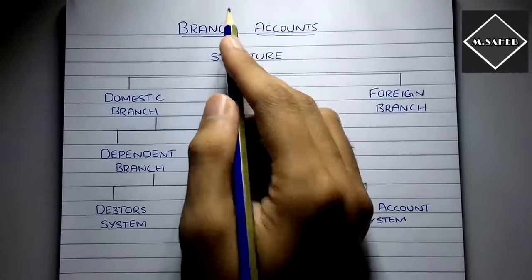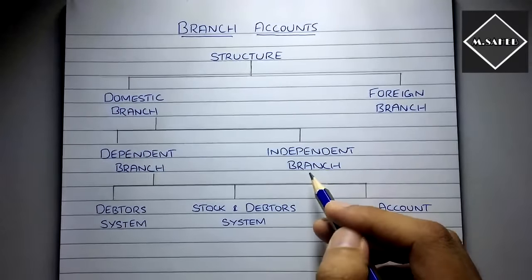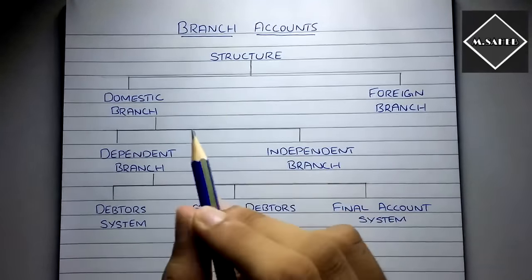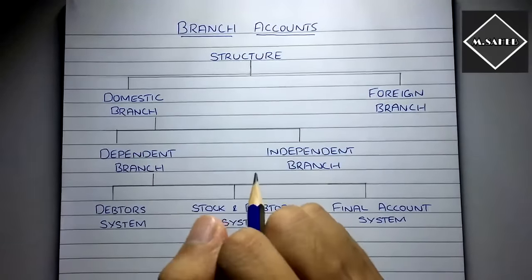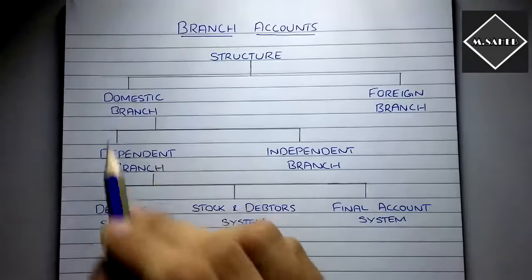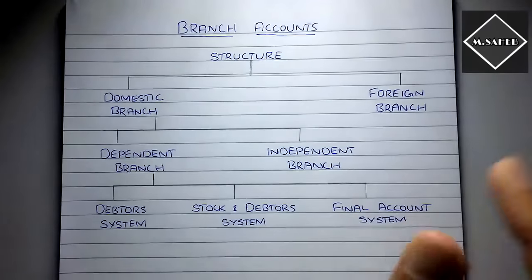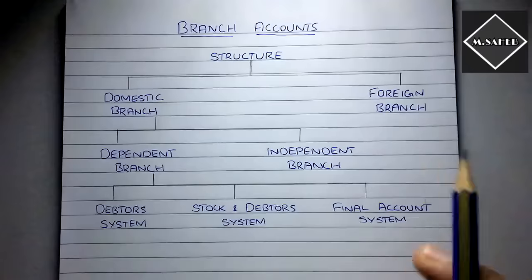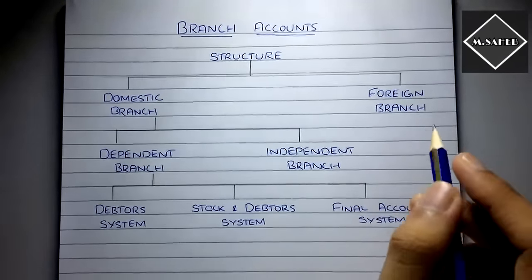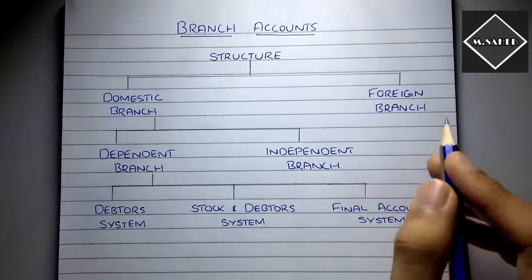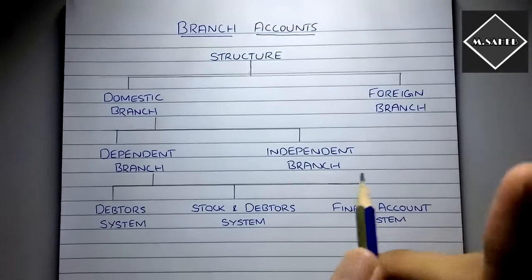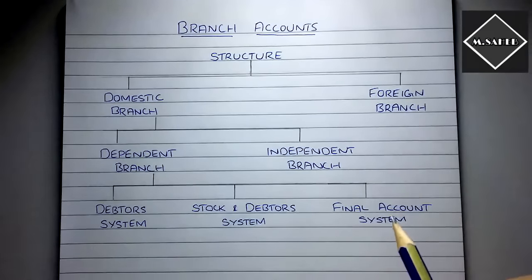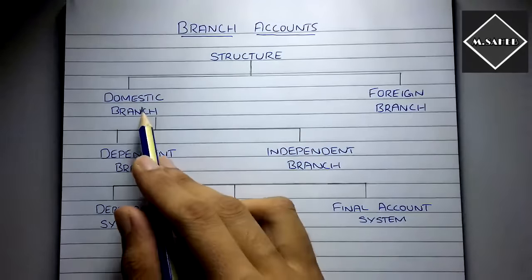Branches are broadly classified into two types: domestic branches and foreign branches. Domestic branches are those located in the same country as the head office. For example, a company headquartered in Delhi opening a branch in Bangalore — that is a domestic branch. Foreign branches are those NOT located in the same country. For example, a company in Delhi opening a branch in the UK would be a foreign branch.